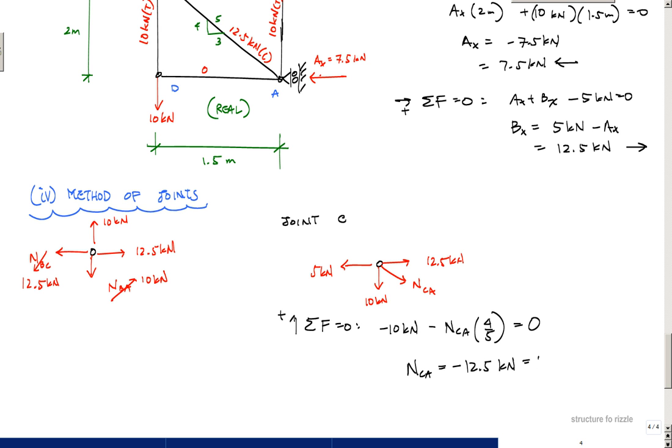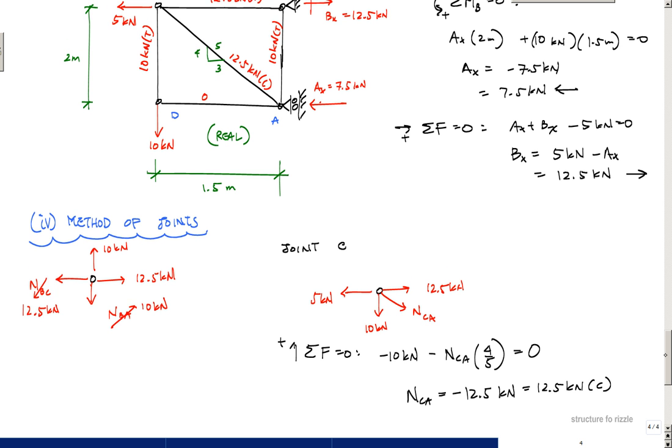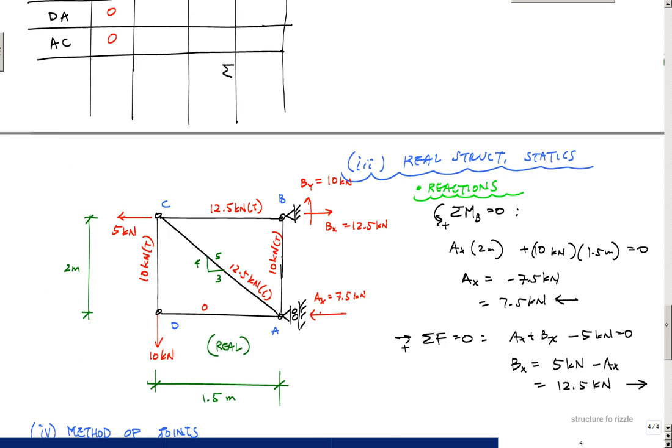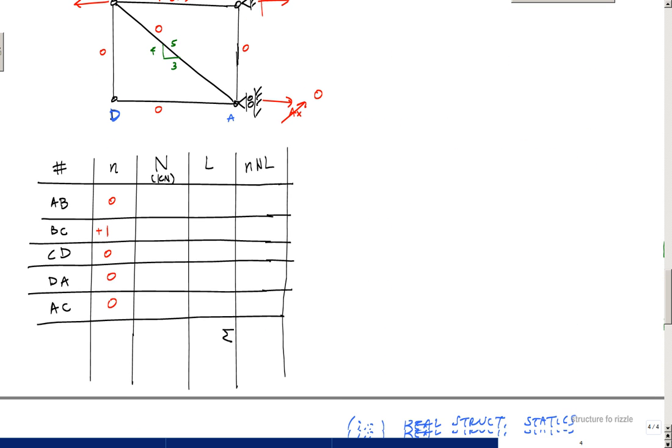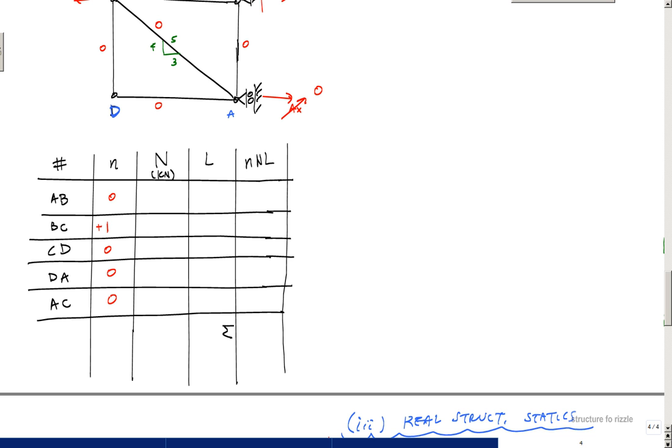Which makes this 12.5 kilonewtons in compression right here. Now that we have all the internal forces due to the real loading, we go back to our table here. This table is essentially telling me that I have 10 kilonewtons here, I'll put positive for tension. BC is plus 12.5 kilonewtons, CD is plus 10, DA is the zero force member, and AC is minus 12.5 kilonewtons in compression.